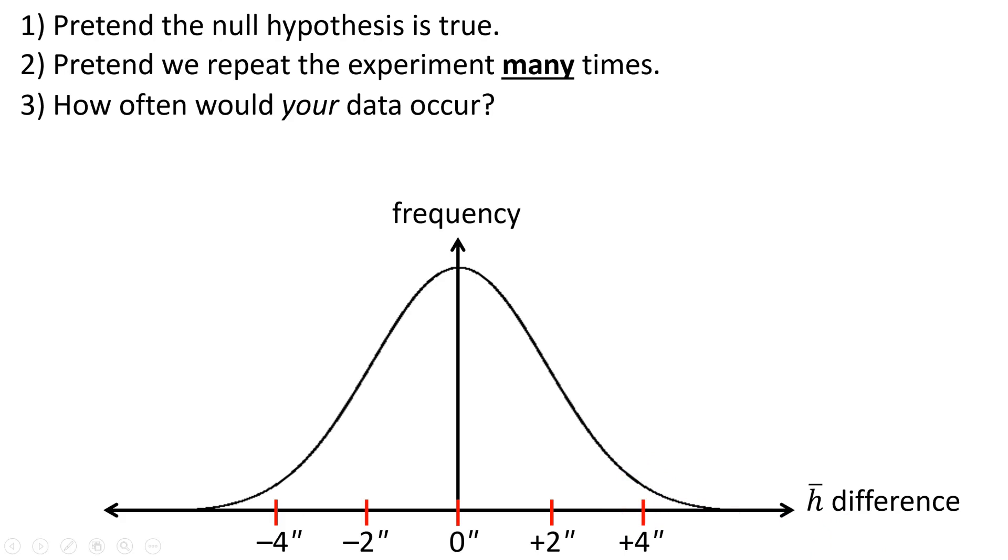But what we do in statistics is we identify outlier regions. Here is an outlier region associated with the p-value of 0.05. These outcomes that I've highlighted, they collectively only occur 5% of the time according to the null hypothesis.